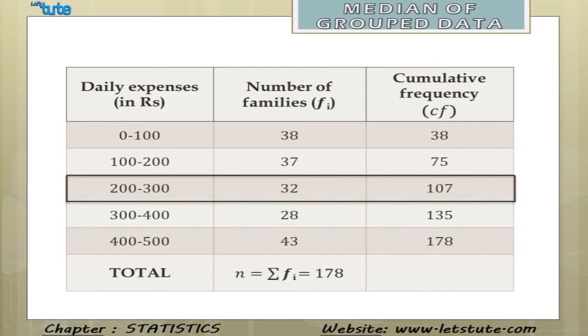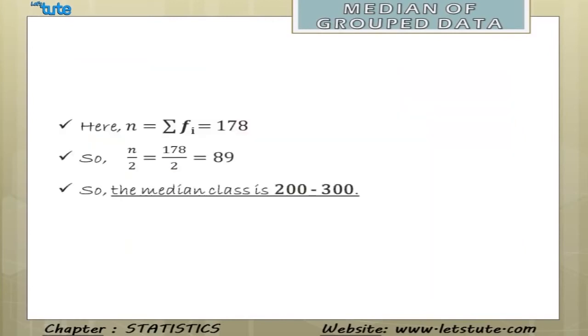The class interval 200 to 300 has a cumulative frequency of 107 which is greater than 89. All these values which are greater than 89 will not be considered because this value is greater than 89 and it is closest to 89. So, the median class becomes 200 to 300.